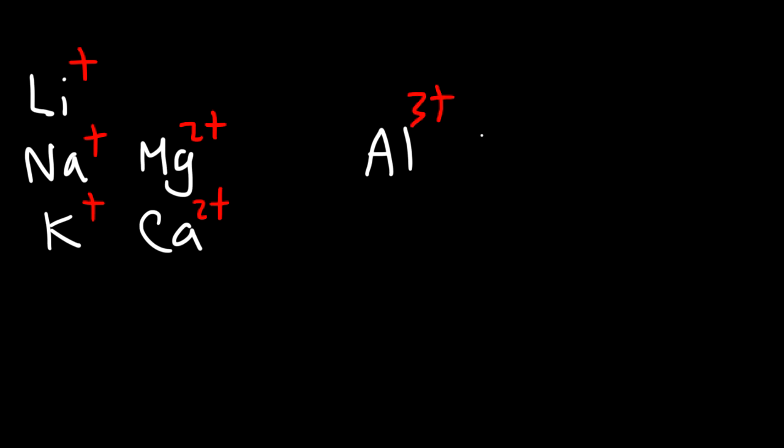Then you have elements like carbon, silicon, germanium, which are found in group 4A. For ionic compounds, it's rare that you'll see those elements.